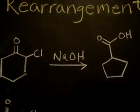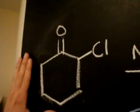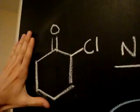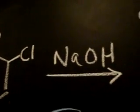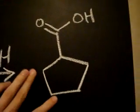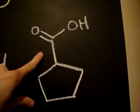This is the Favorskii rearrangement. So for the Favorskii rearrangement, we start with this alpha-halo ketone, shown right here. And then we insert it into a basic solution. And then when we do that, it results in a ring shrinkage and a formation of this carboxylic acid derivative.